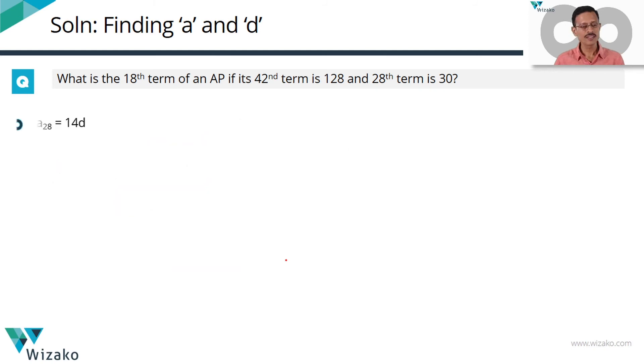Quickly see it in a printed form. Between the 42nd and 28th term, how many common differences? There are 14 common differences. Let's plug in values for both these things, which is 128 minus 30, which is equal to 98. Each common difference therefore is equal to 7.